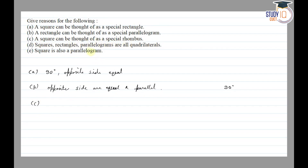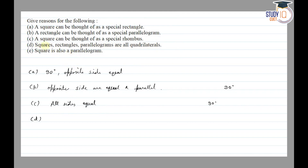Part c: A square can be thought of as a special rhombus. A rhombus has all sides equal, and in a square all sides are also equal. But in a square, all interior angles are 90 degrees. So a square is a special rhombus in which all interior angles are 90 degrees.